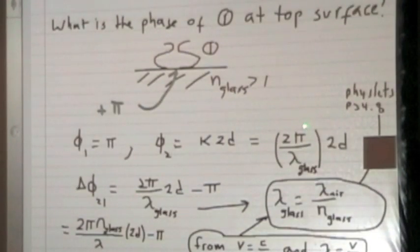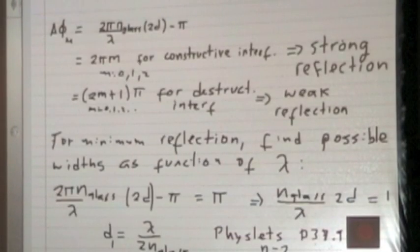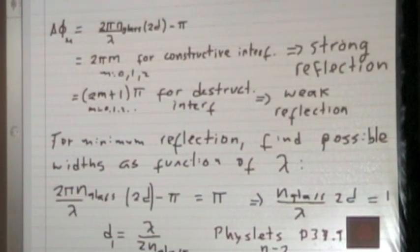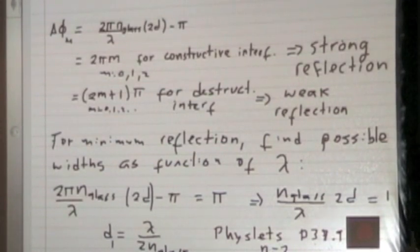So we have an expression for the phase difference between the two waves. Now we ask: do I want constructive or destructive interference? If the phase difference equals 2πm (m = 0, 1, 2, …), you get constructive interference and a strong reflection. If it equals an odd multiple of π, you get destructive interference and weak reflection — the two waves cancel each other.